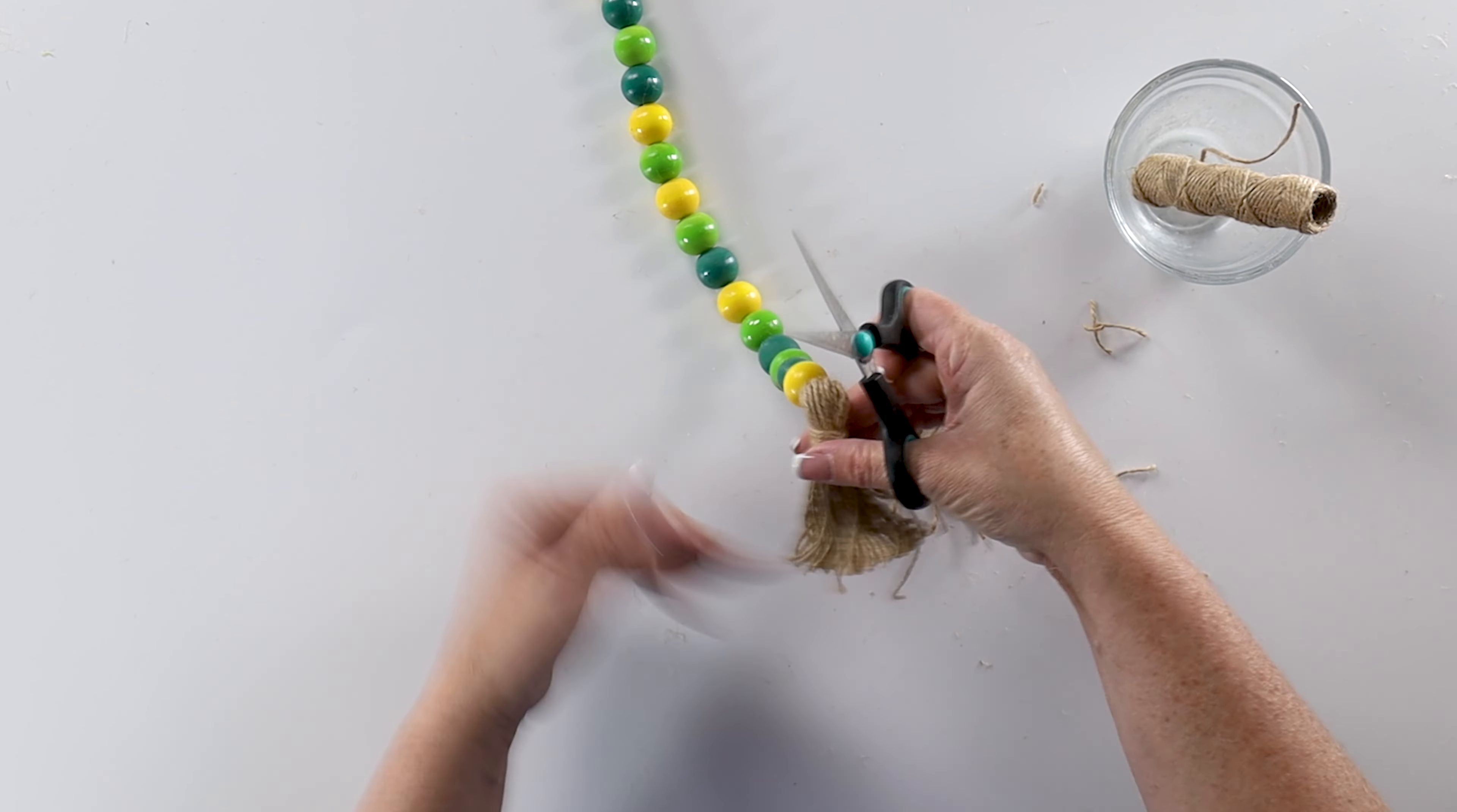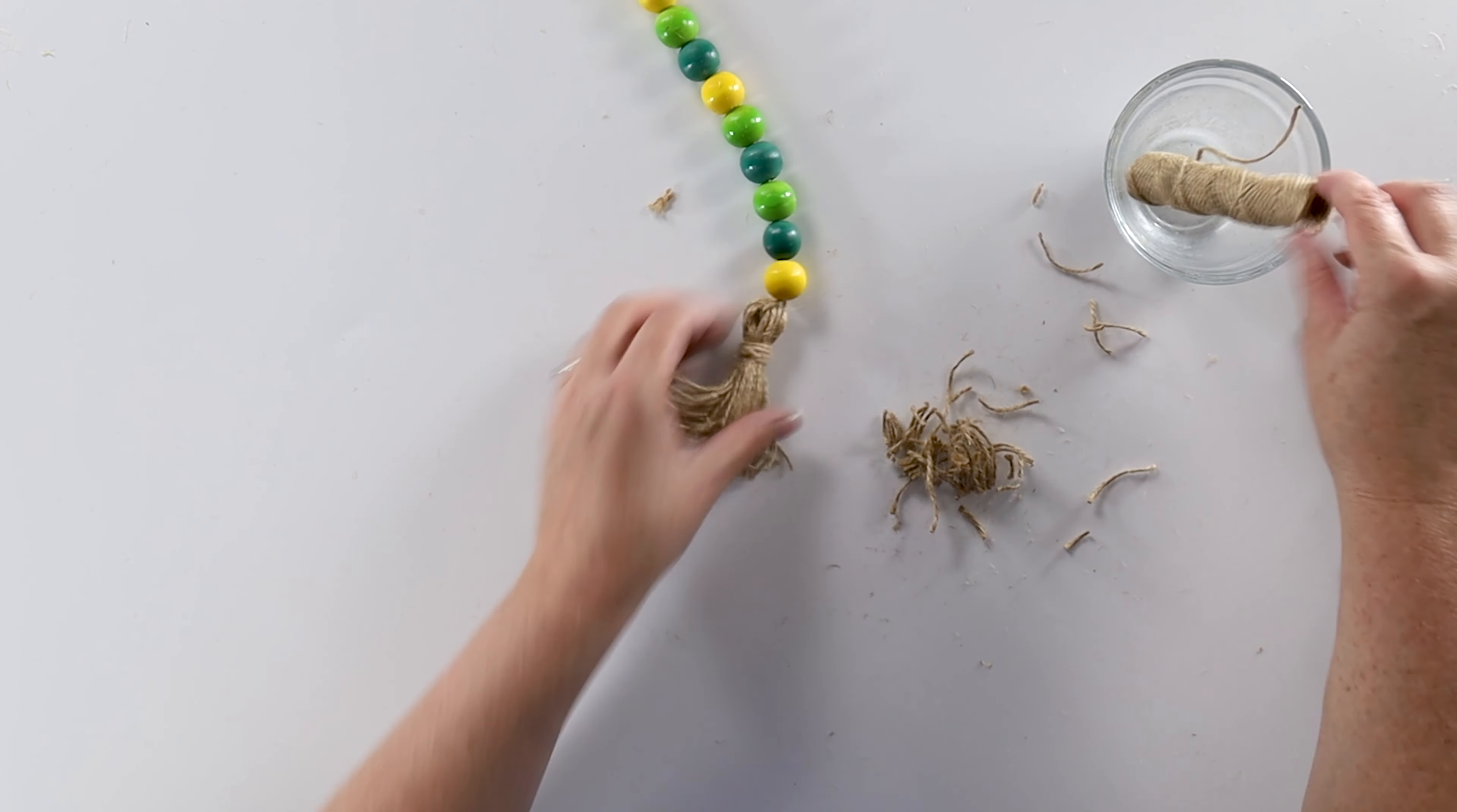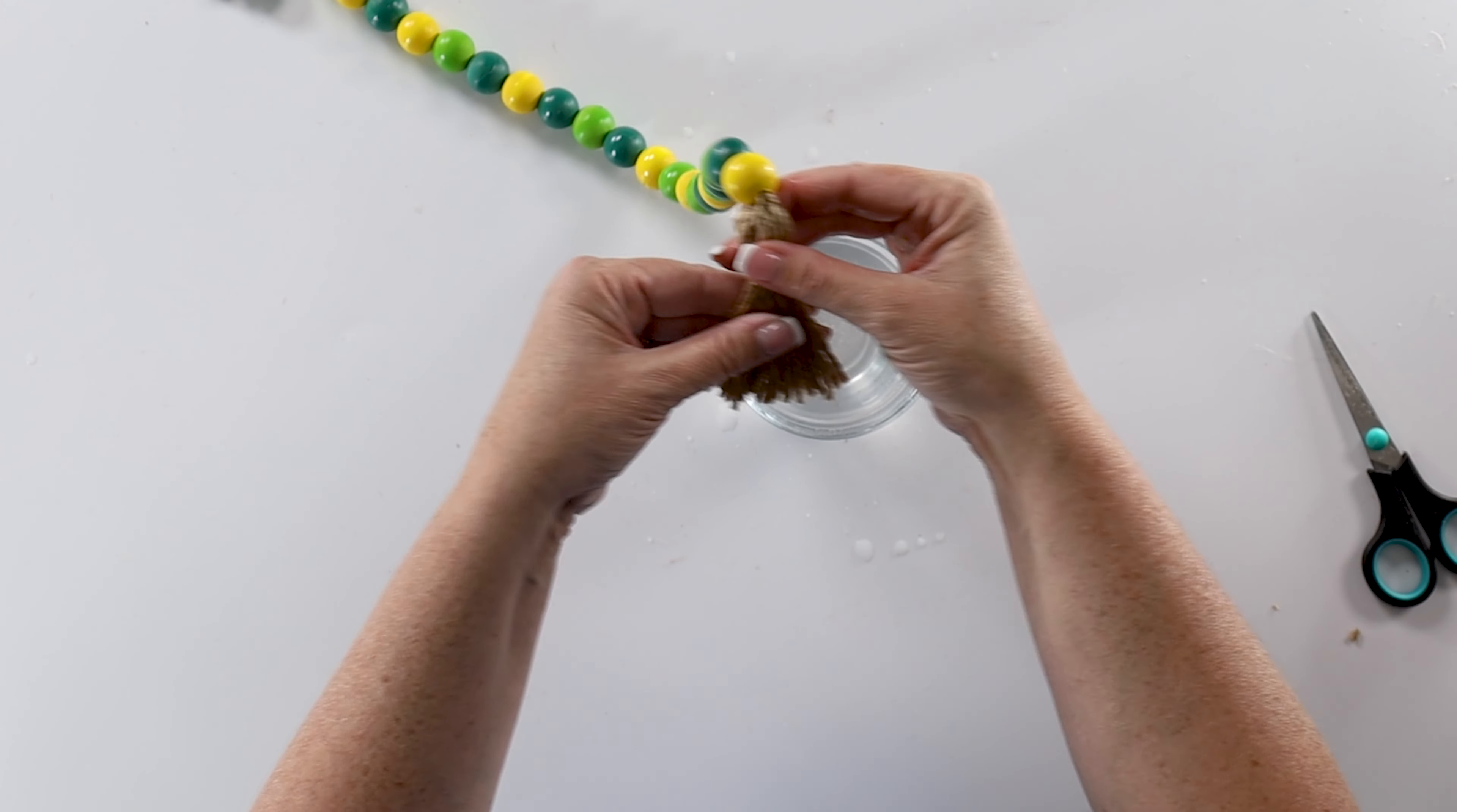Now you'll notice with the twine I'm using that it doesn't lay nice and flat. The twine kind of keeps its natural shape from being wrapped on the spool. So it's kind of everywhere. So I'm going to fill this with some water. And I'm just going to dip my tassel ends in there, wring them out, dip and wring them out. Okay, now we're going to let that dry.